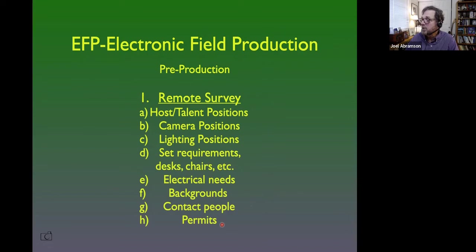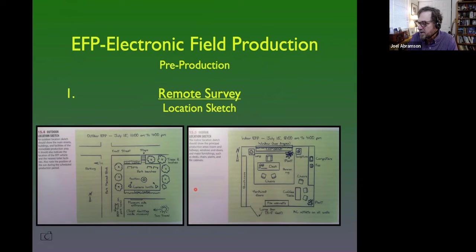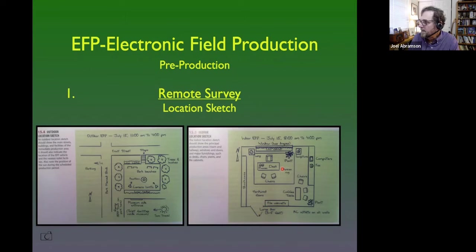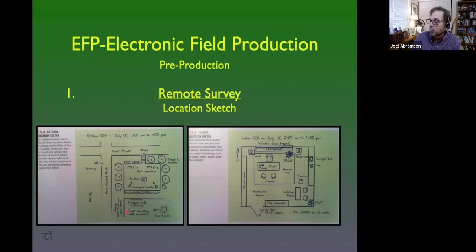In your remote survey, you may do a location sketch. Here are a couple of location sketches from the book — one is an outdoor location, one is an indoor location. It's a good idea to write in different things like where AC outlets are on all walls, where you're getting your electricity from, what your backgrounds look like, and where you could set up cameras. For outdoor sketches, you need to know sun travel — where the shadows are going and what lighting options are going to happen. Also note where the facilities are and where everyone is going to park.